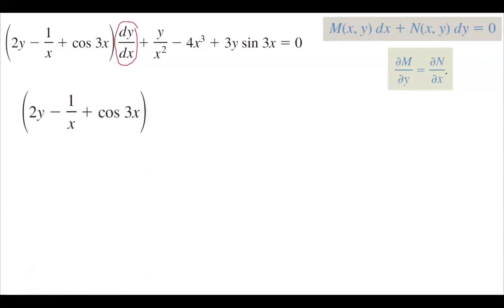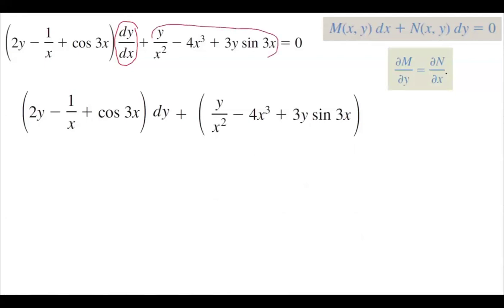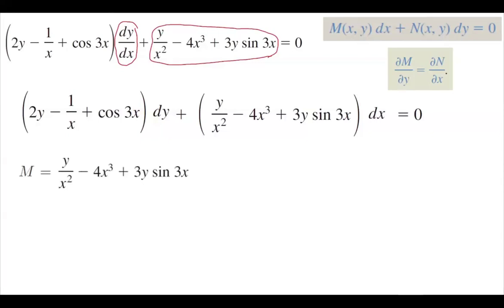We multiply everything by dx to simplify. We get (2y − 1/x + cos(3x))dy plus (y/x² − 4x³ + 3y·sin(3x))dx = 0. Now we identify M and N. M is the quantity next to dx, so M(x,y) = y/x² − 4x³ + 3y·sin(3x).